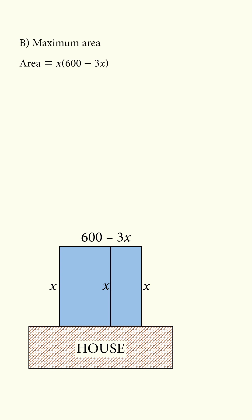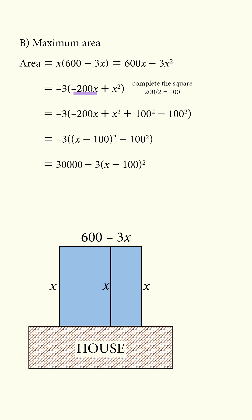To get the maximum area, we expand this out, factor a negative 3. Then we complete the square by adding and subtracting 100 squared. We do a little bit of algebra here.